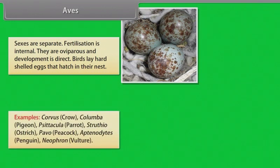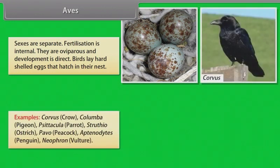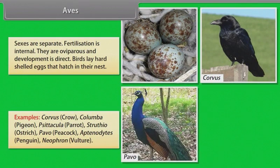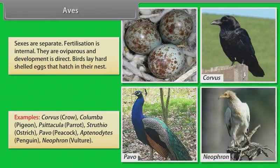Examples: Corvus (Crow), Columba (Pigeon), Psittacula (Parrot), Struthio (Ostrich), Pavo (Peacock), Aptenodytes (Penguin), Neophron (Vulture).